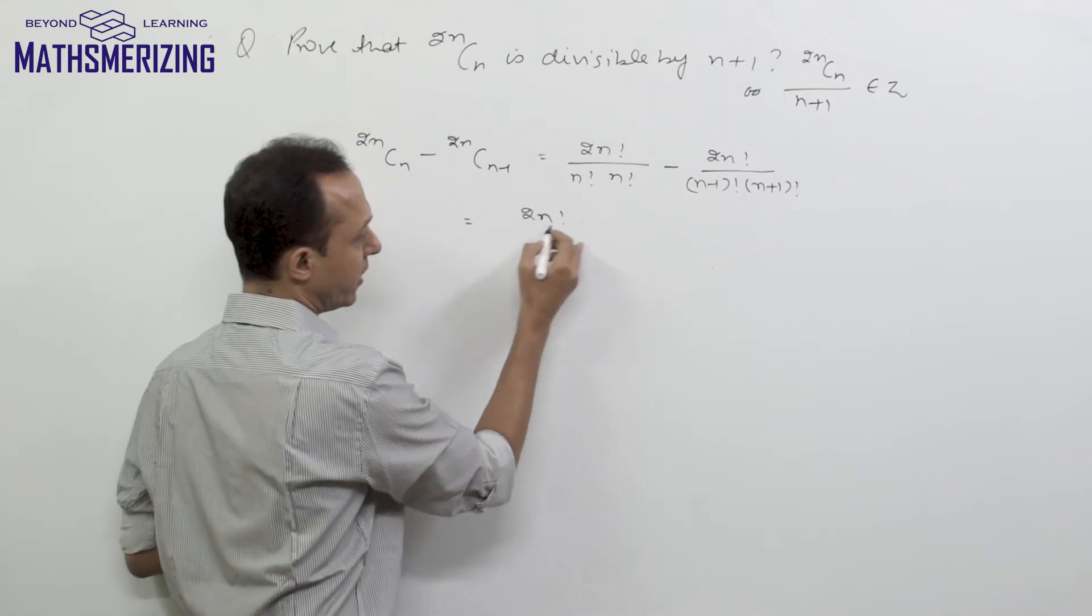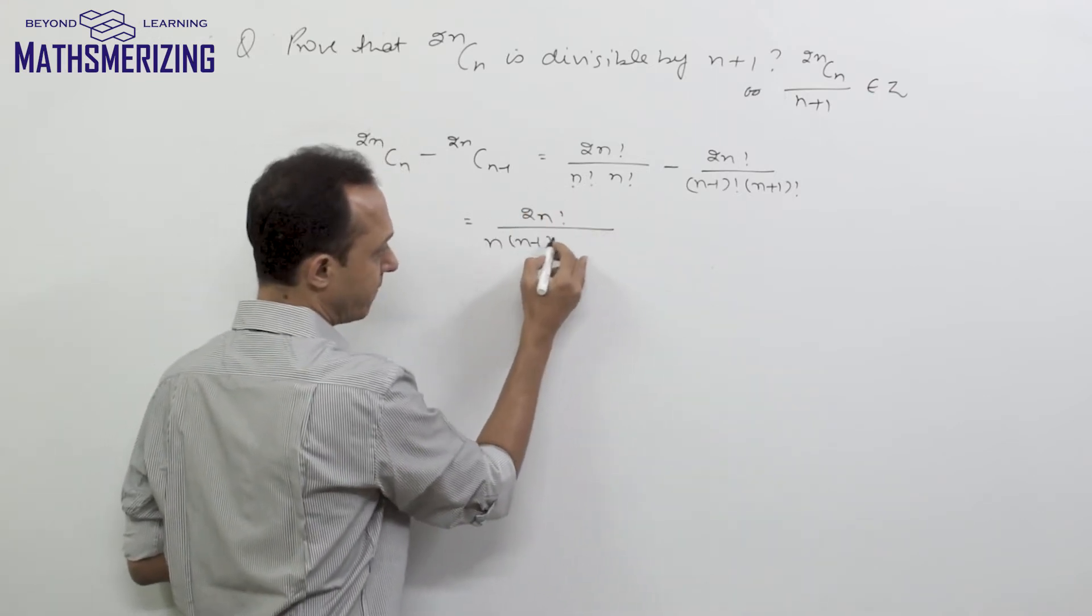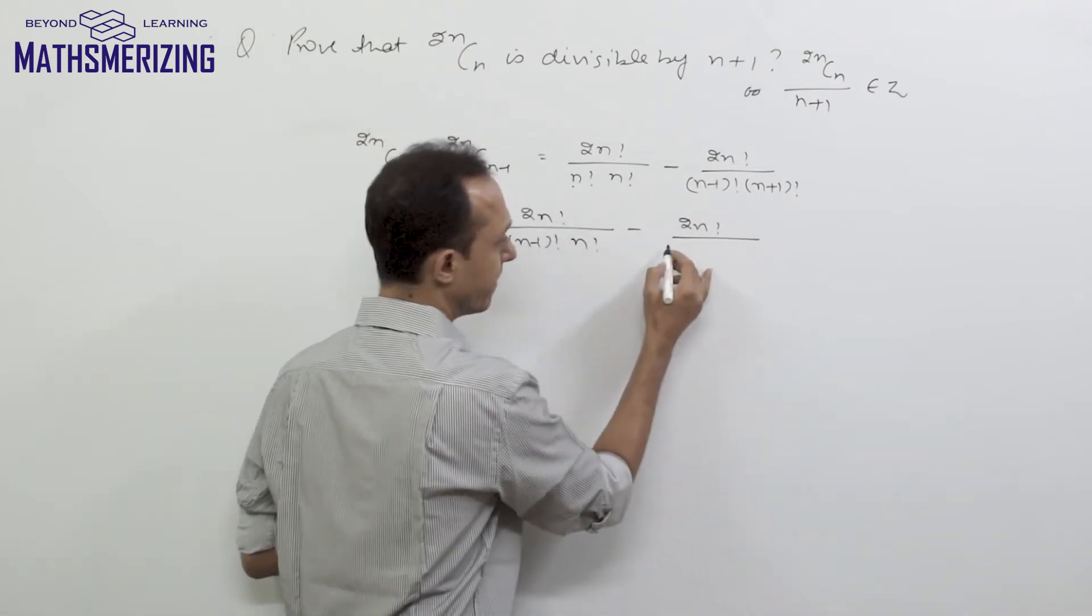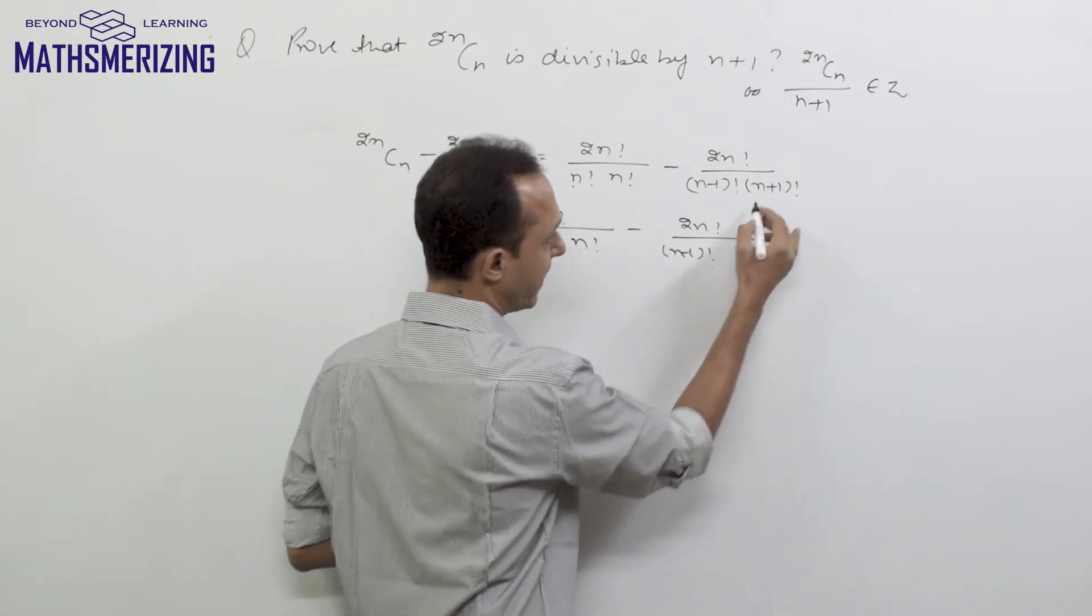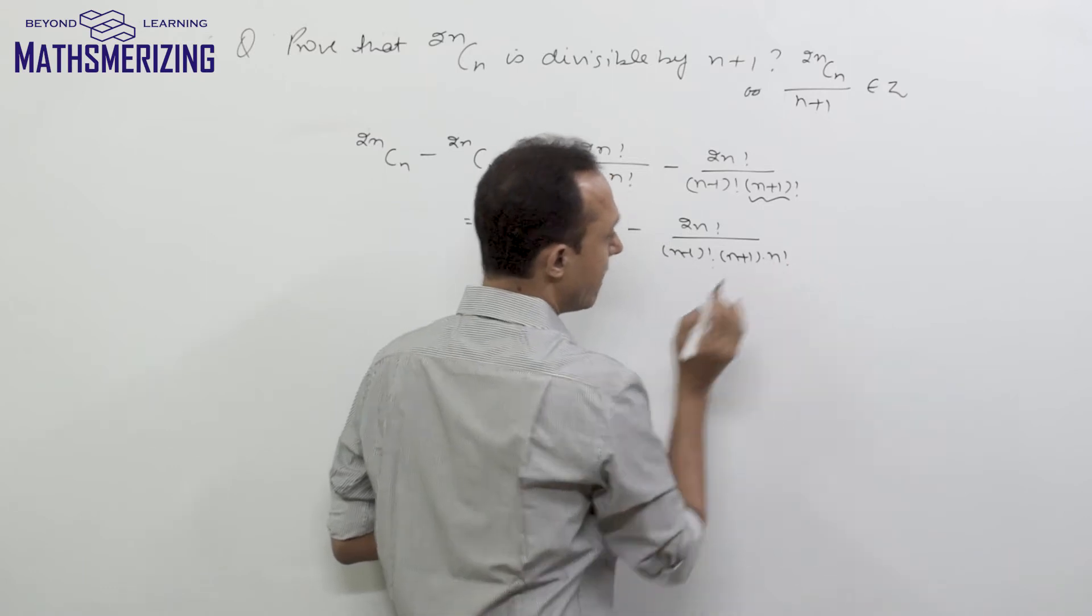So I will write it as (2n)! over n times (n-1)! times n!, and this again is (2n)! over (n-1)!, and for this n+1 I can write (n+1) times n!.